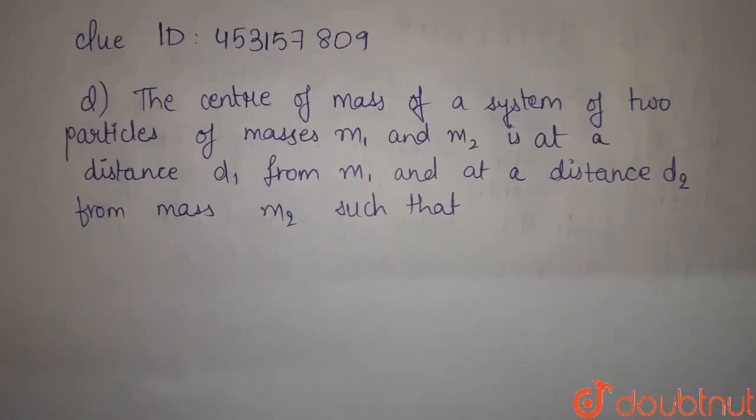Our question is: the center of mass of a system of two particles of masses M1 and M2 is at a distance D1 from M1 and at a distance D2 from mass M2, such that...